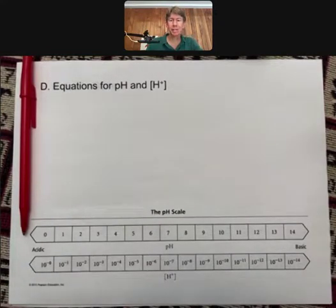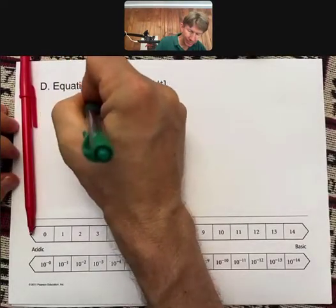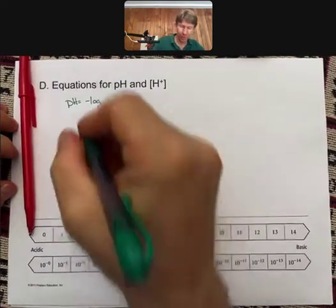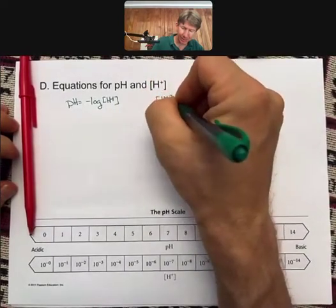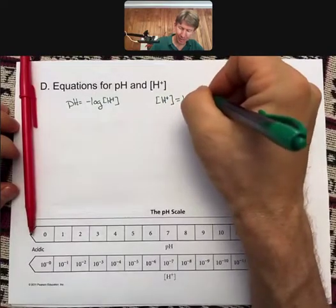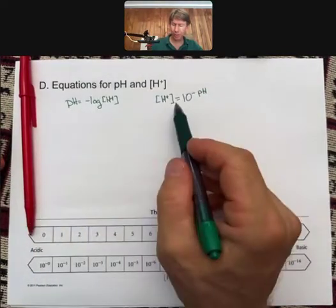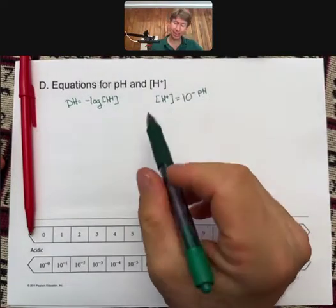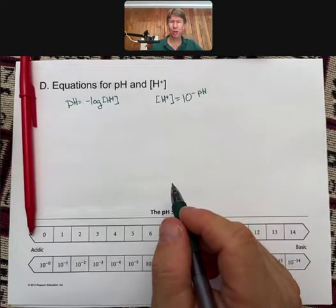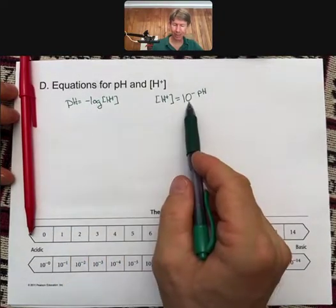Now let's talk more about equations for pH and concentration of H+. There are two main equations, one of which we've already seen: pH equals the negative log of the concentration of H+. And it turns out these two are opposites, or one cancels the other. Log and 10 to the are opposites.